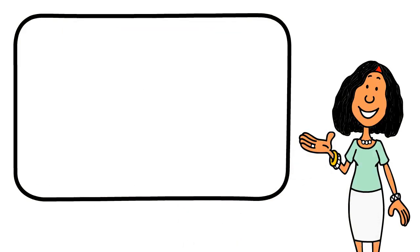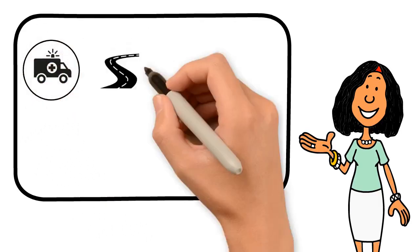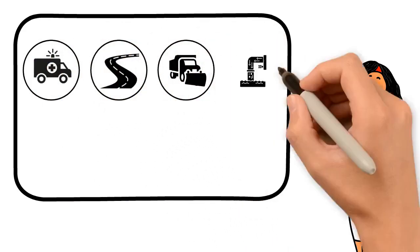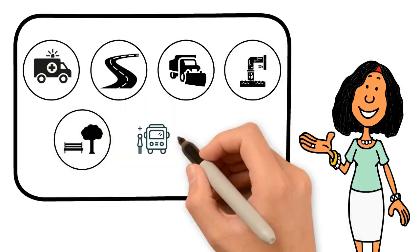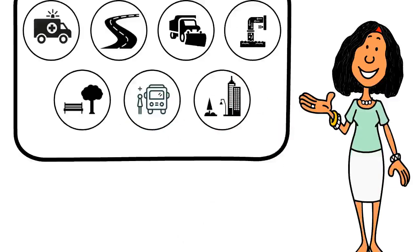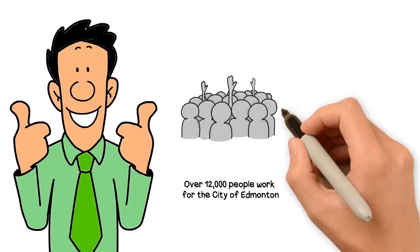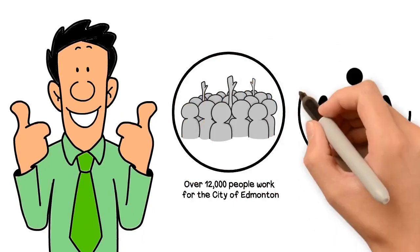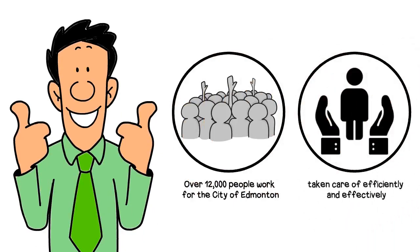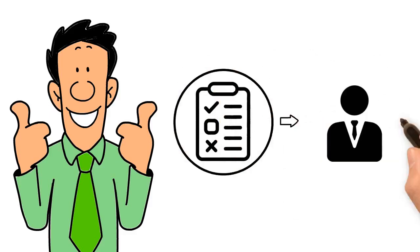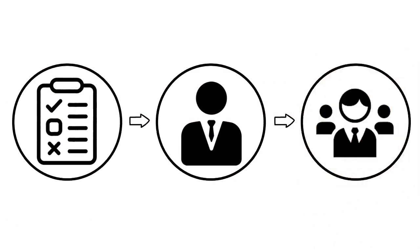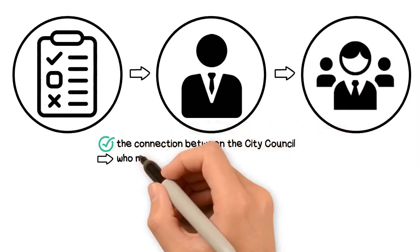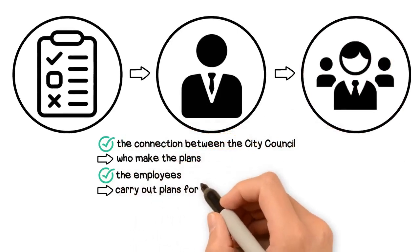Some of the city's responsibilities include emergency services, maintaining local roads, snow removal, garbage, water and sewage systems, parks, recreation centers and libraries, transit systems, and planning city streets and buildings. Over 12,000 people work for the city of Edmonton to make sure that services are taken care of efficiently and effectively. They all report to the city manager, who is currently Andre Korbold. The city manager reports to city council and is the connection between the city council, who makes the plan, and the employees who carry out the plans for the city of Edmonton.